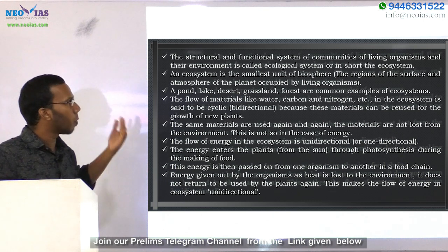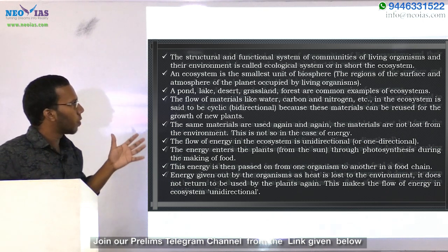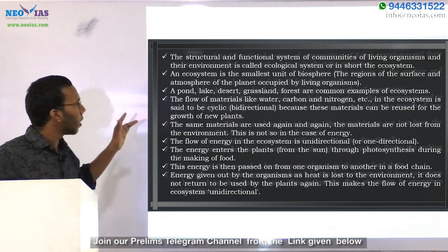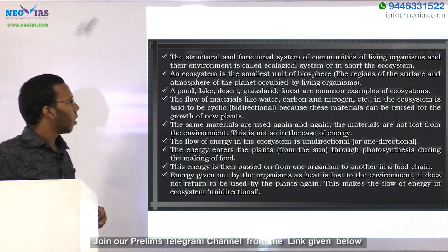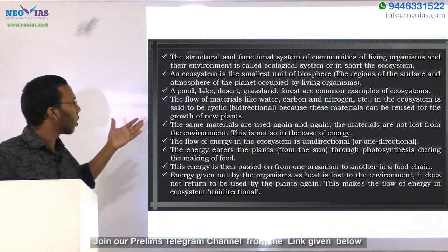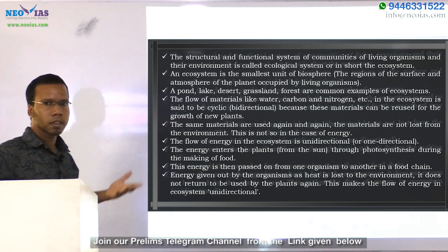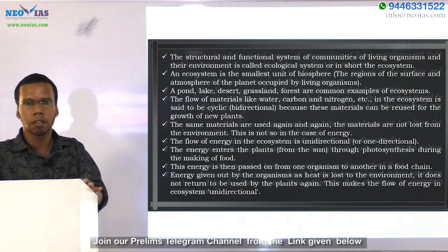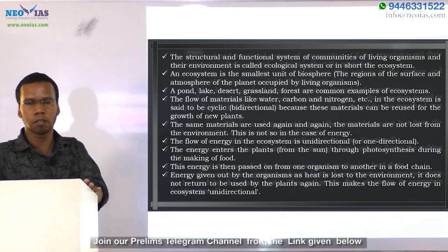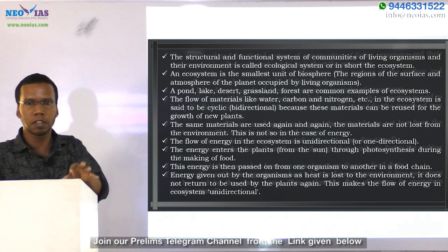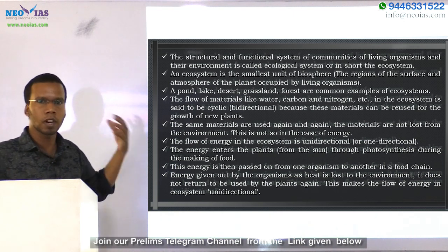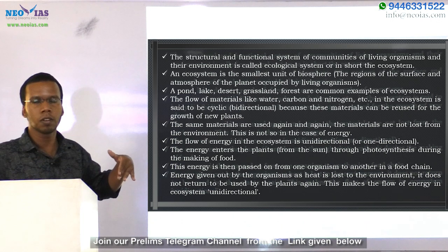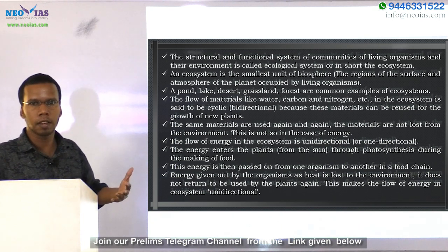An ecosystem is the smallest unit of the biosphere. Biosphere means the regions of the surface and atmosphere of the planet occupied by living organisms. There are lots of examples for ecosystems like forest, pond, lake, desert, and grassland. In these ecosystems, species interact for their energy needs through eating and predation. One species gets energy from another through the food chain, and thereby forms the ecosystem.